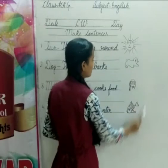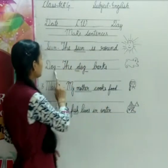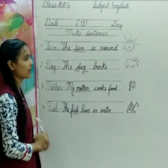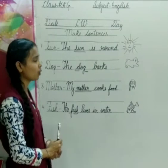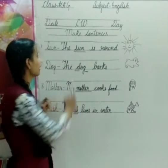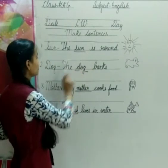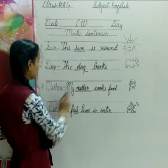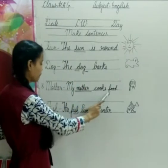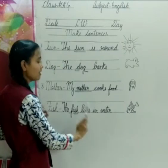Students, these all are the sentences, okay, these all are the examples of mixed sentences. Now you have to keep practicing at your homes. I'll repeat once again: Sun, the sun is round. Dog, the dog barks. Mother, my mother cooks food. And fish, the fish lives in water.